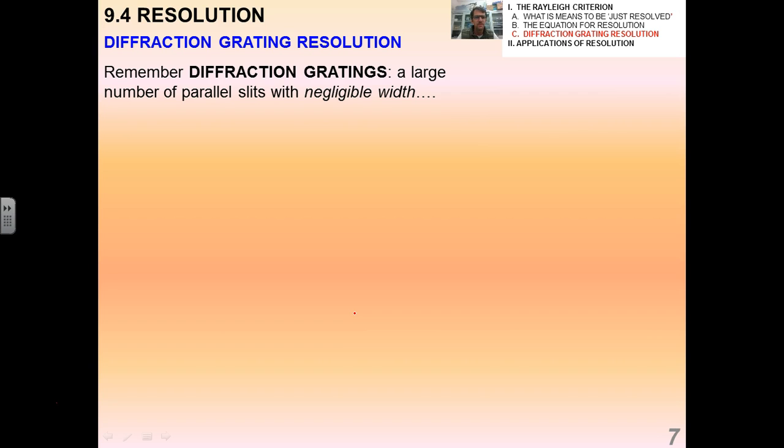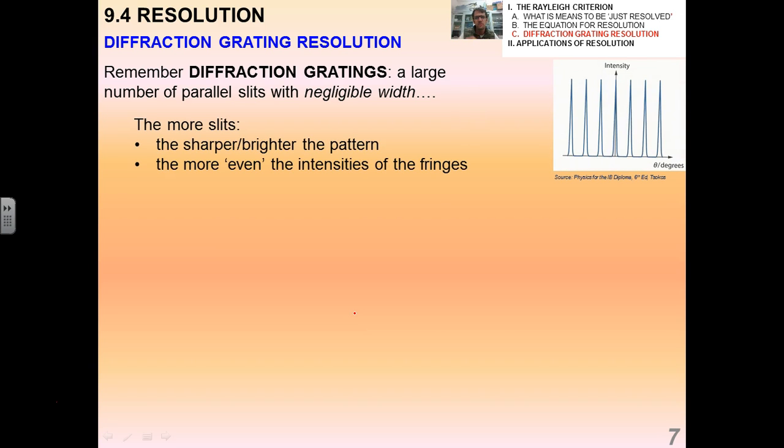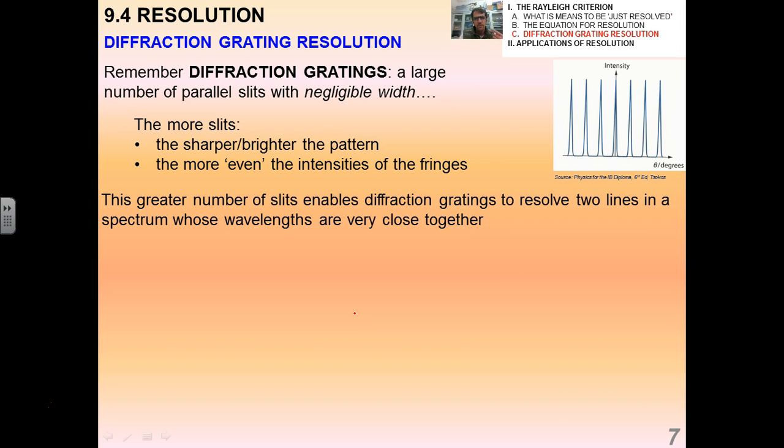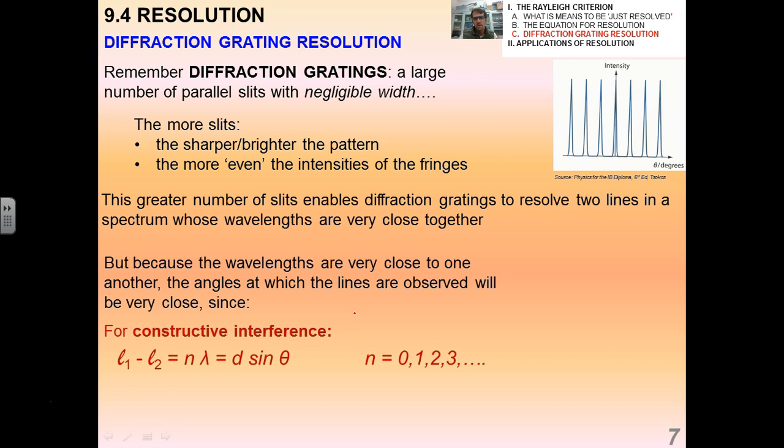I want to talk a little bit more about diffraction gratings. Diffraction gratings, remember that's a large number of parallel grooves or slits with negligible width. We said before that the more slits that a diffraction grating has, the sharper and brighter the pattern. The other thing is that the more even the intensities of the fringes. So the greater number of slits enables diffraction gratings to resolve two lines in a spectrum where we have wavelengths that are super close together, and this has very important practical uses in science. Because the wavelengths are very close to one another, the angles at which the lines will be observed will be very close, since for constructive interference we have that n lambda equals d sine theta.